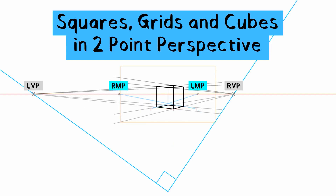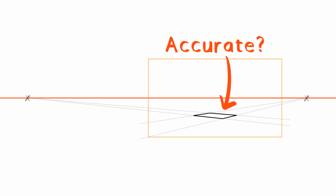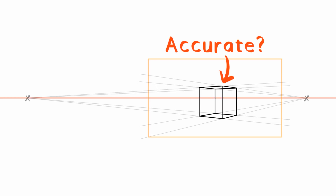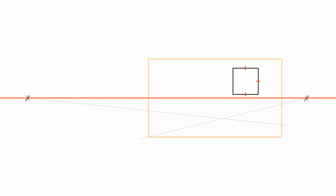Squares, grids, and cubes in two-point perspective. We can easily make rectangles in two-point perspective, but what if we want to make accurate squares and cubes? How do we make sure our sides are all equal length in perspective?